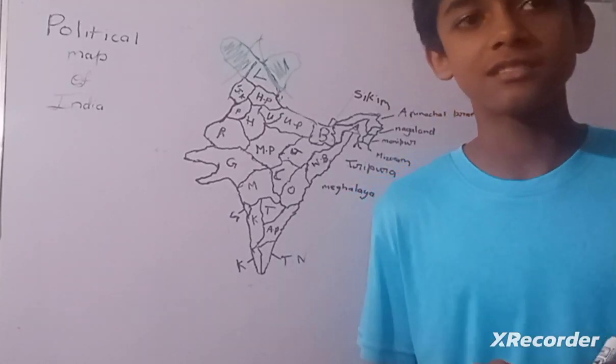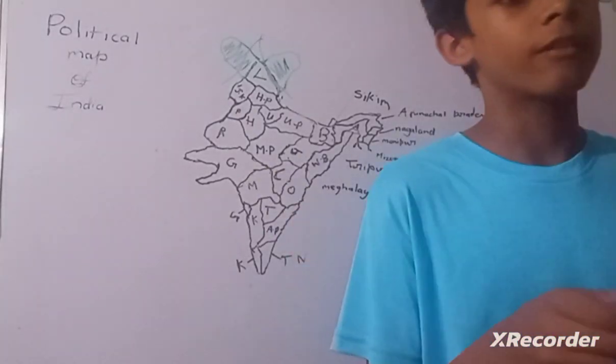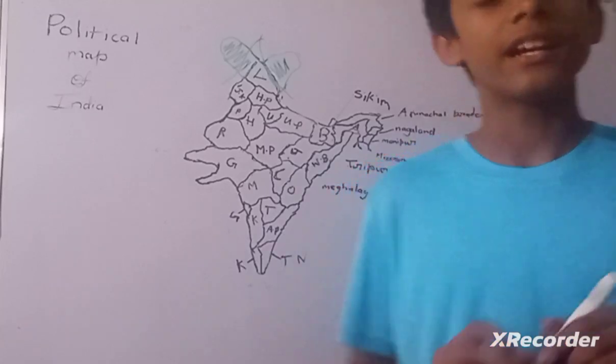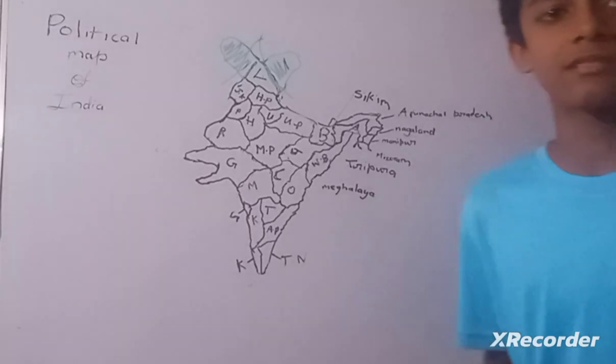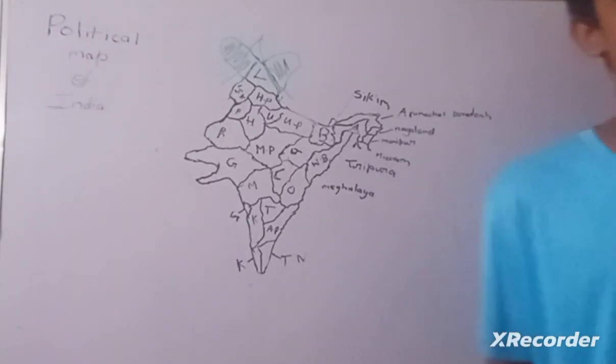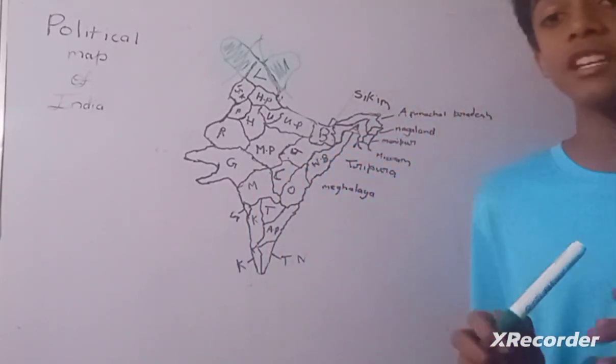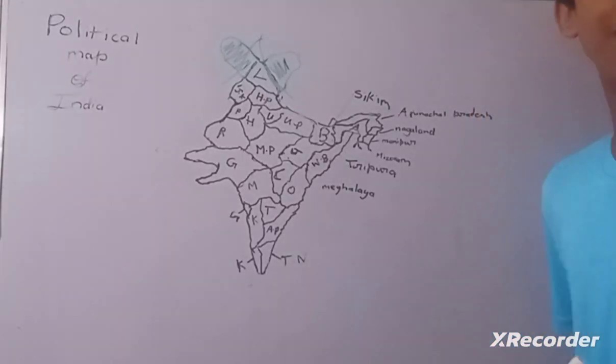Now we will talk about West Bengal. West Bengal, it's very densely populated and famous for fishery business. Capital is Kolkata. Now about Jharkhand. Jharkhand has rich mineral resources and is also famous for many tribal towns, and its capital is Ranchi.